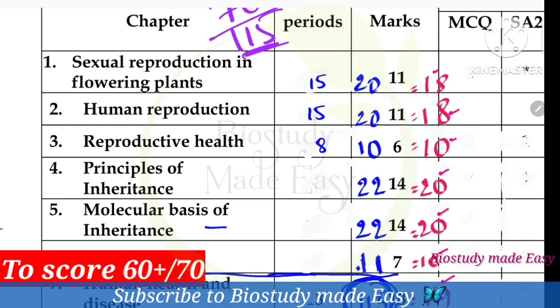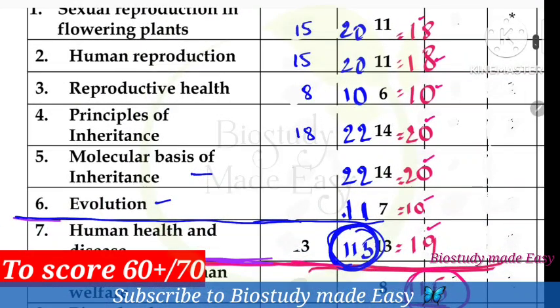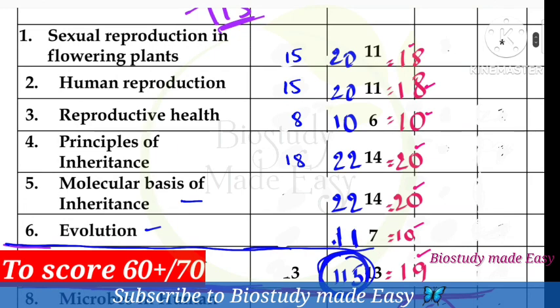Next, principles of inheritance and variation chapter — we have to calculate 18 marks. And next, molecular basis of inheritance chapter — we have to calculate its weightage. On average, we are targeting 60 marks.